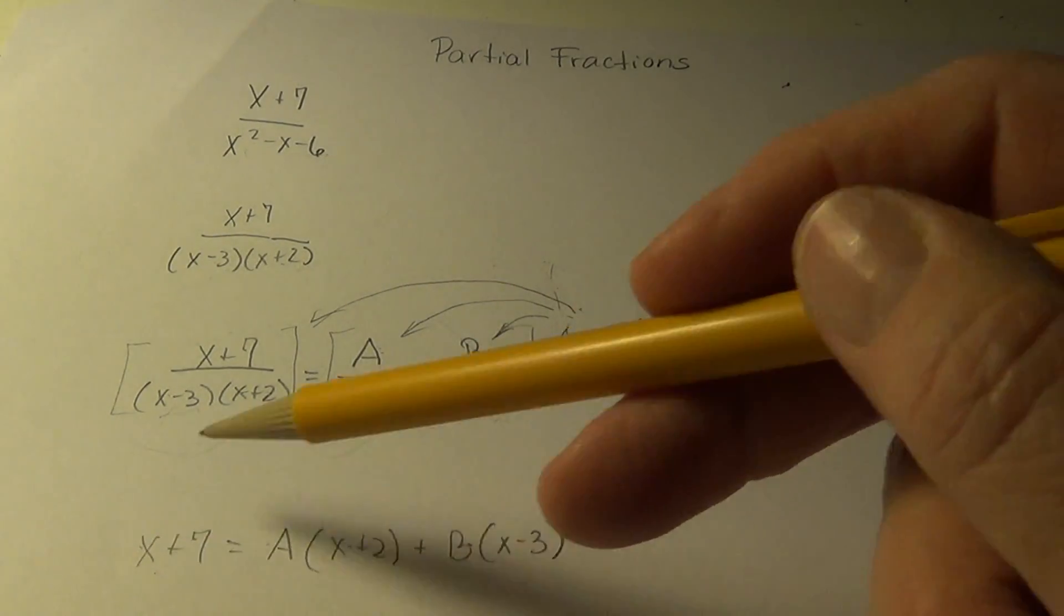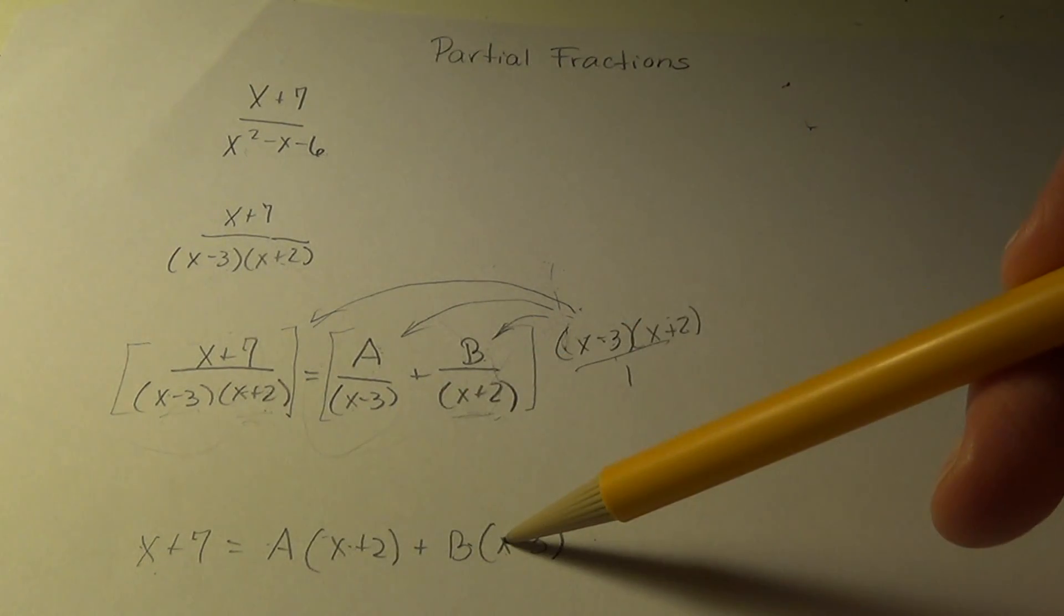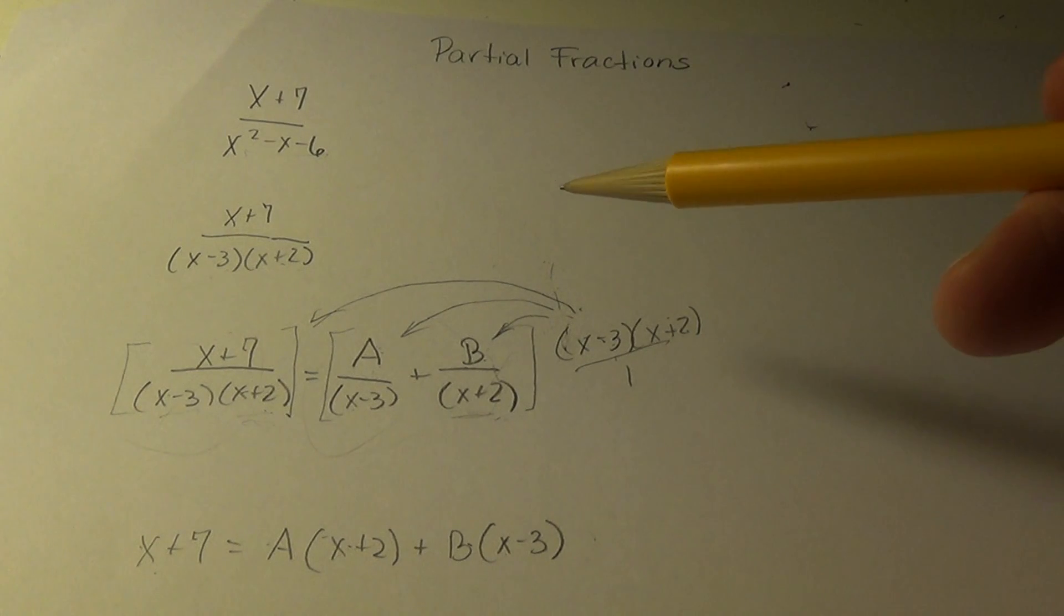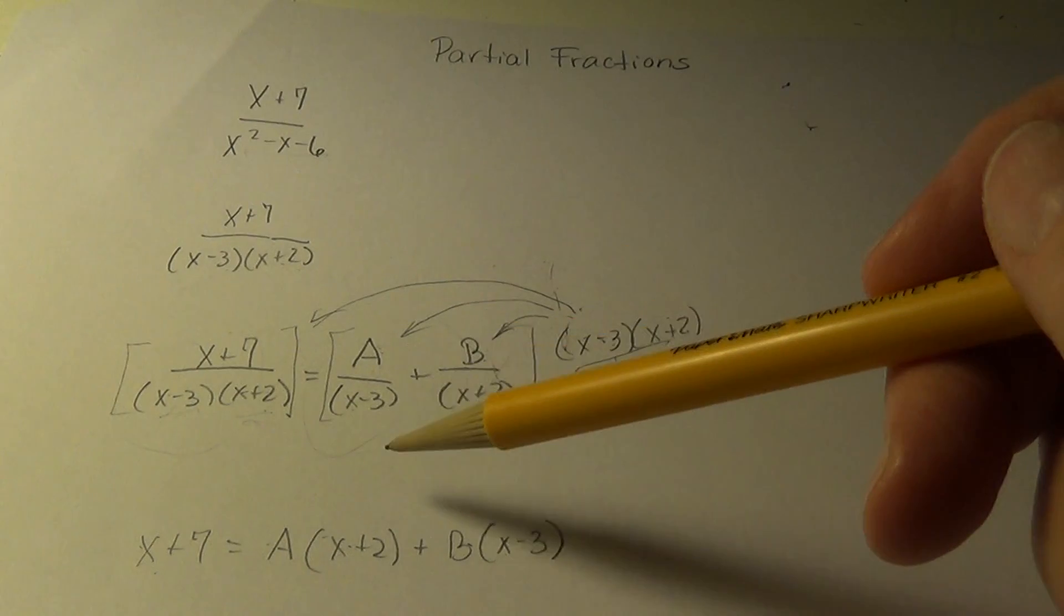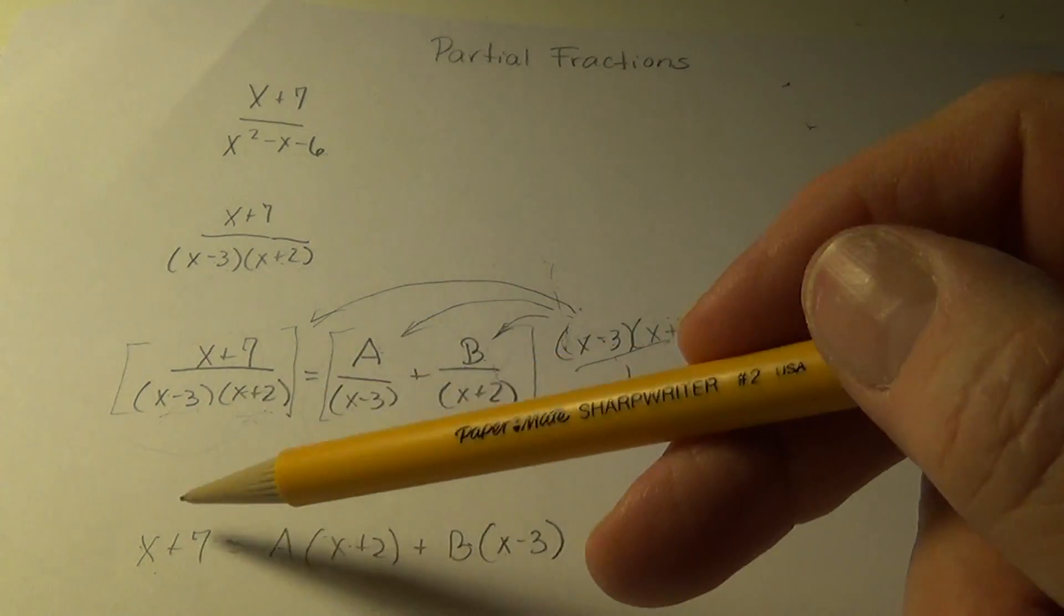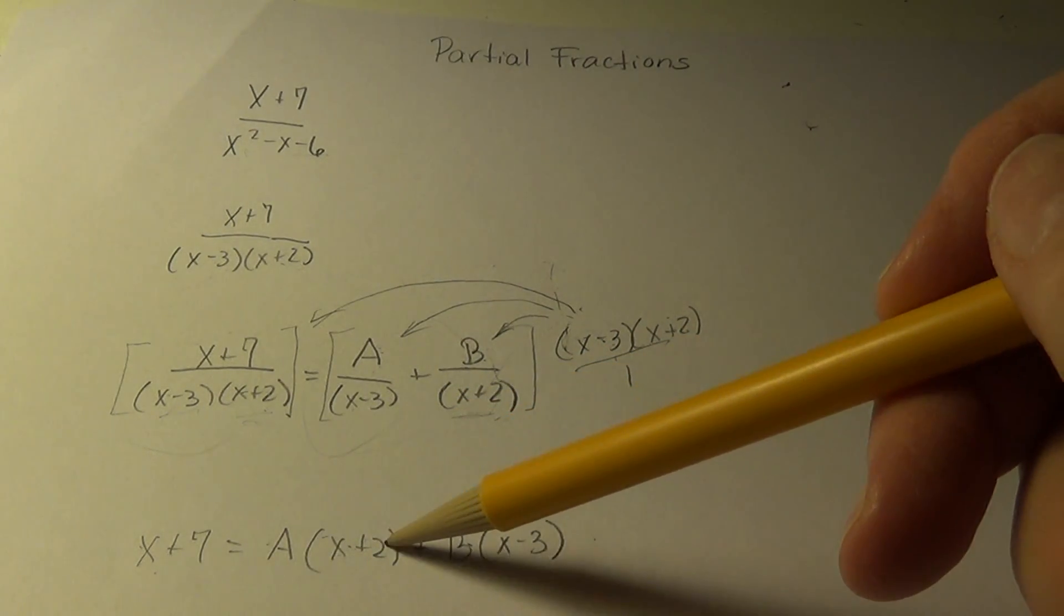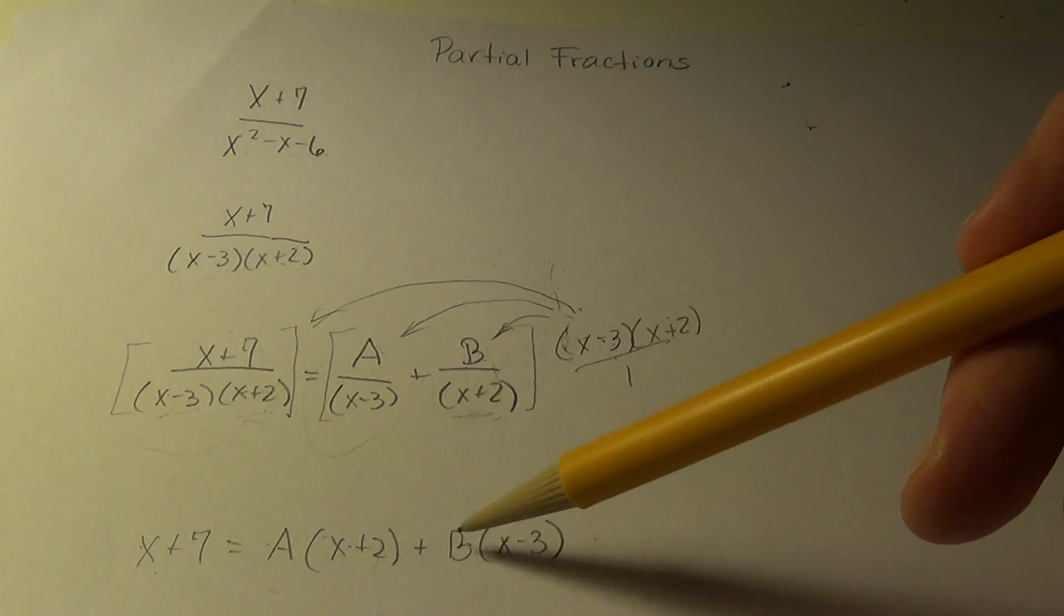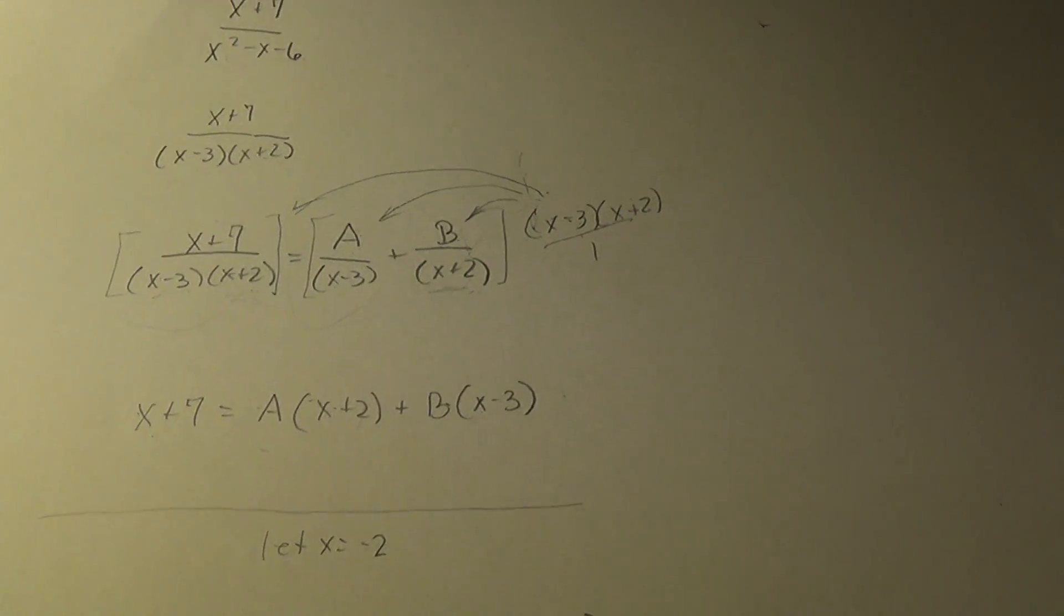So we can let x equal any number as long as it's the same in each position where x appears. So strategically, I'm going to let x equal minus 2. Observe why I chose that. We can say x equals a thousand and two, but it wouldn't simplify our work. Minus 2 plus 2 will zero out this term and cause us to find out what b is. So everywhere, let's let x equal minus 2. Everywhere there's an x, I put minus 2.